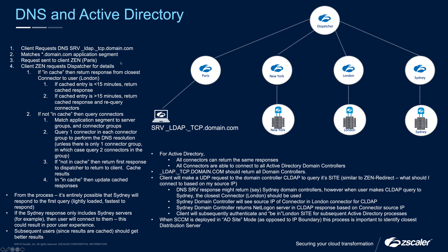The Paris ZEN looks at policy, confirms star.domain.com is valid and the user's policy applies, then talks to the dispatcher — a CA function. The CA sees the wildcard domain and determines that connectors in New York, London, and Sydney are all part of the connector group associated with that application segment. The dispatcher then asks all connectors across their control channels — New York to New York ZEN, London to London ZEN, Sydney to Sydney ZEN — to perform DNS resolution for this SRV record.